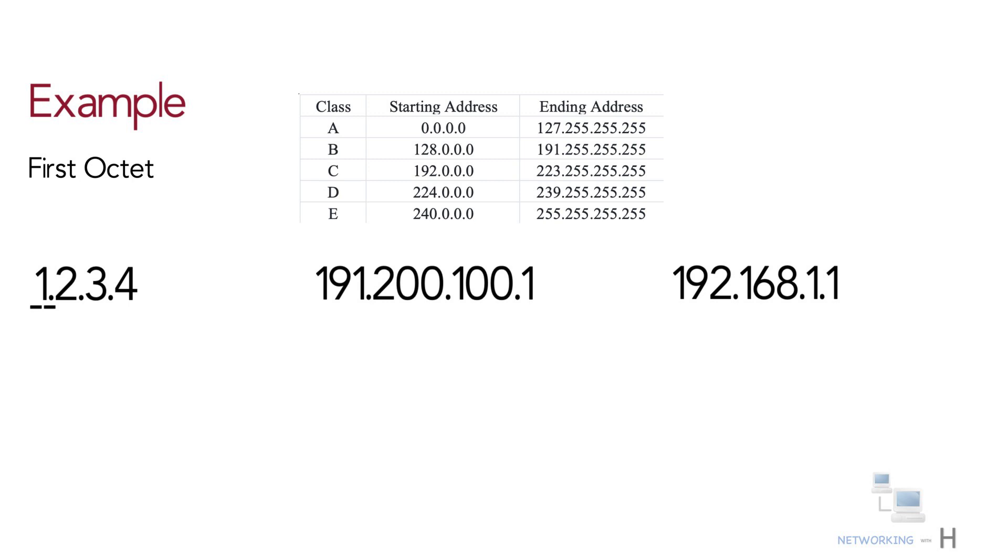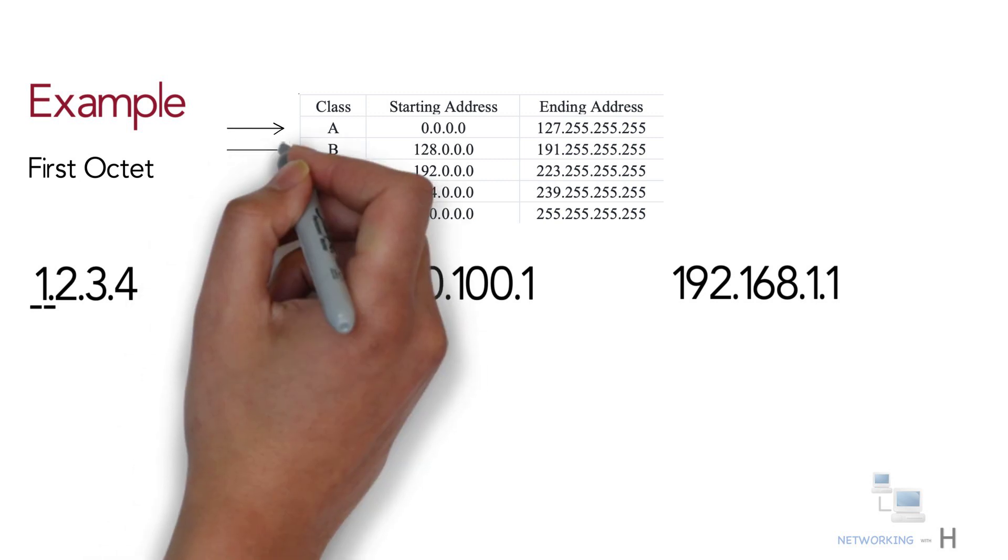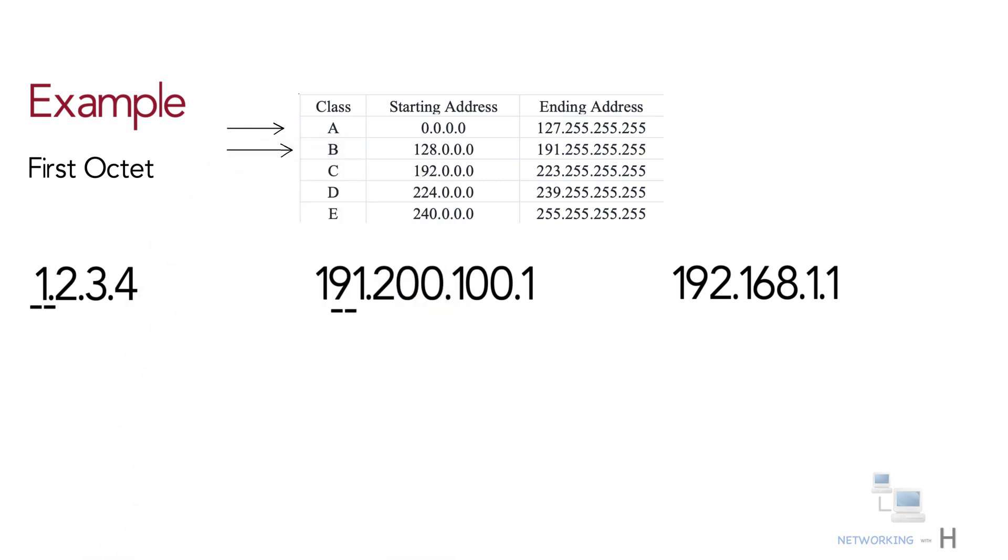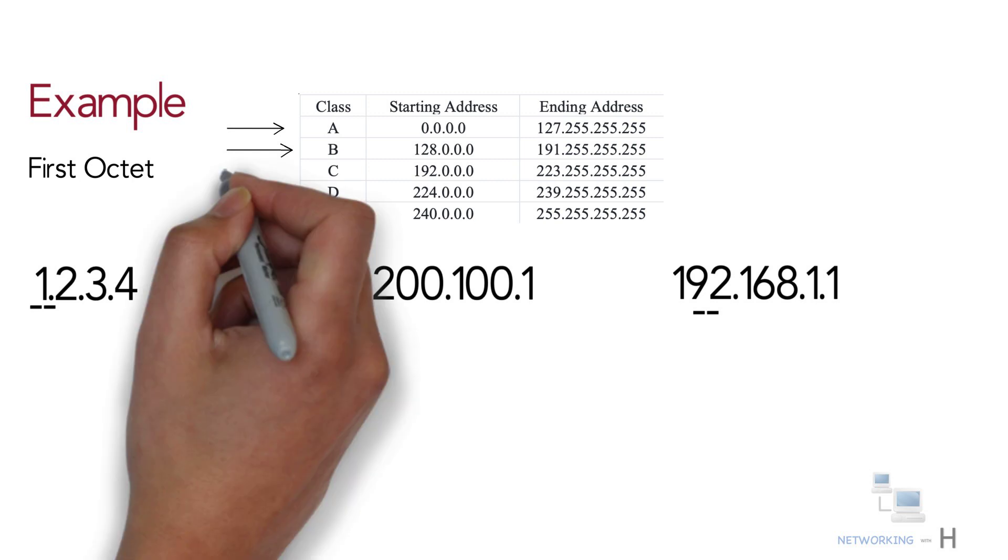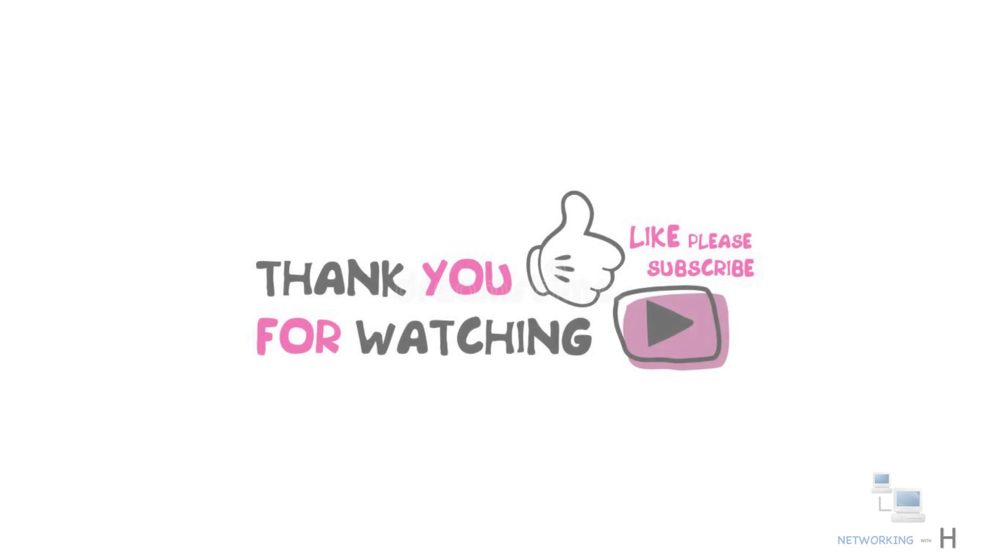If the value of the first octet is in the range of 1 to 127, it's a Class A IP address. If the value of the first octet is in the range of 128 to 191, it's a Class B IP address. If the value of the first octet is in the range of 192 to 223, it's a Class C IP address. That's it for this session. Thank you for watching. Please like, share, and subscribe.